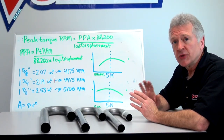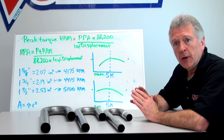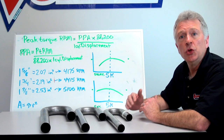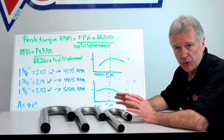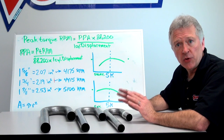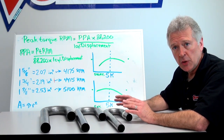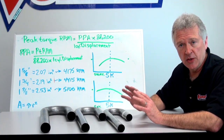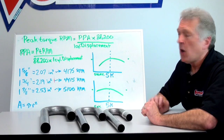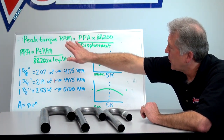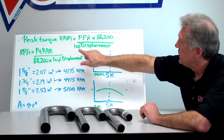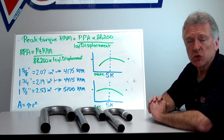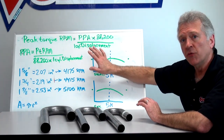Today's formula: I want to solve for a primary pipe area. In doing so, I will know what type of primary tube diameter I'm looking for. Our initial equation tells me that peak torque RPM equals the primary pipe area times a constant of 88,200, divided by the displacement of one single cylinder.